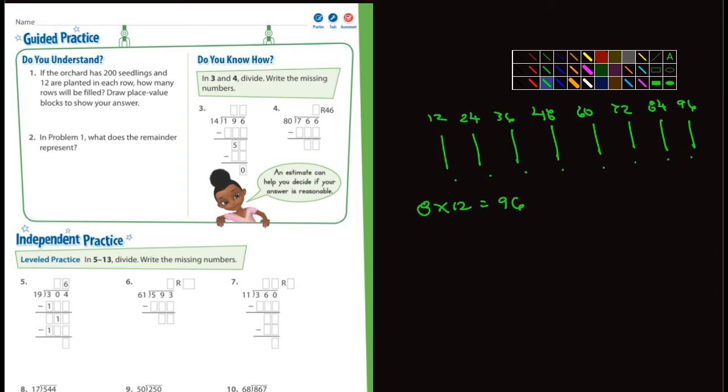It says draw place value blocks to show your answer. I'm not worried about you guys drawing a place value block, go ahead and just give me your answer. You could do it that way, I think it'll take you a little bit longer. But another way to do it would be simply taking 200 and dividing that by 12. Does 12 go into 20? Yes, it goes into 20 once. I'm going to put a 12 there. Now we're subtracting from 20, what's left over? There's an 8. Now we need to bring down the next 0. How many times does 12 go into 80? Well it goes into 80, let's see, 6 times and the answer is 72. What's left over? 8.